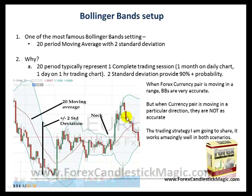Here's another thing I wanted to mention. When the currency pair is moving in a range, the Bollinger Bands are very accurate. But when the currency pair is moving in a particular direction, they are not as accurate. Most traders will open a trade when the currency pair hits a particular Bollinger Band, and close the trade as soon as it basically reaches the other Bollinger Band.